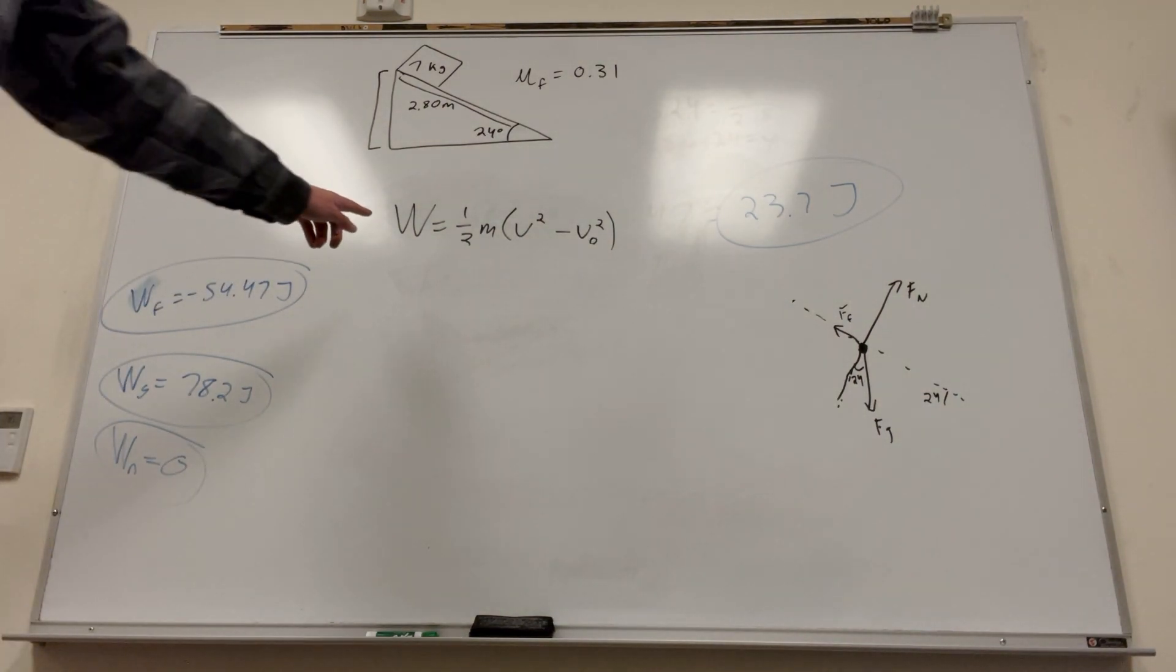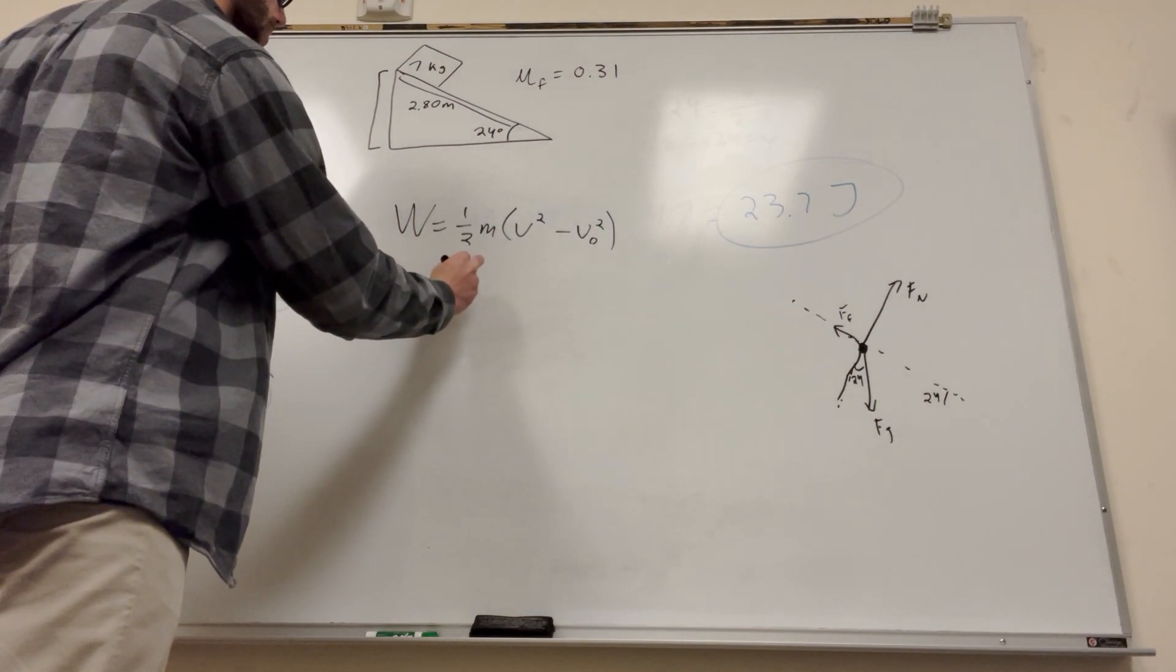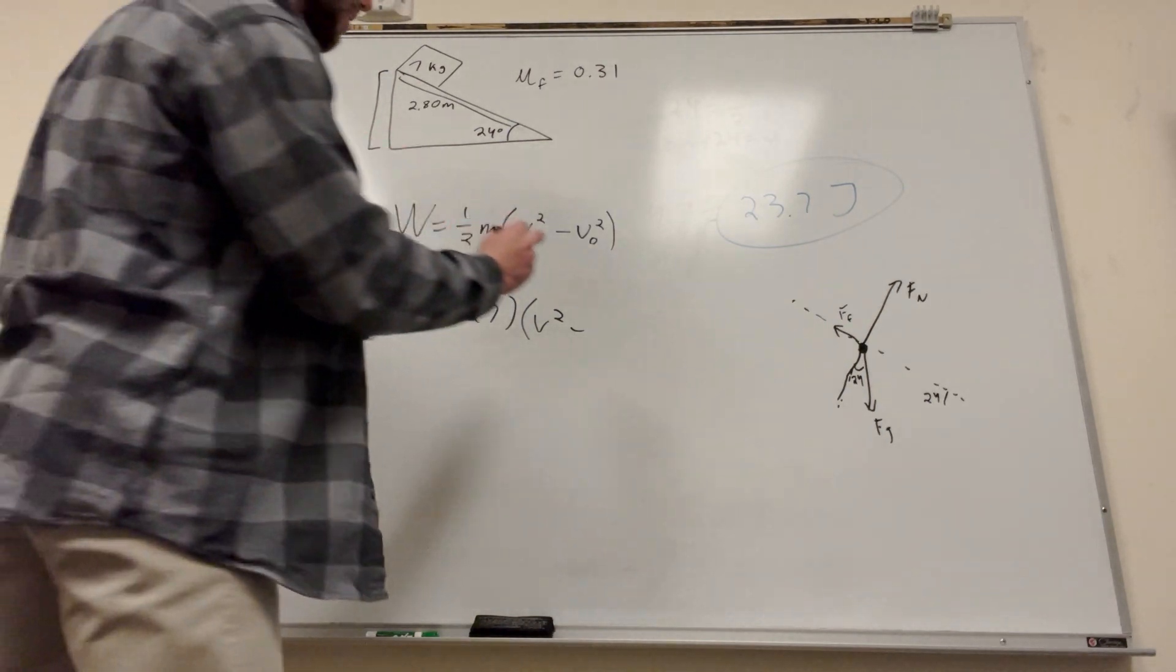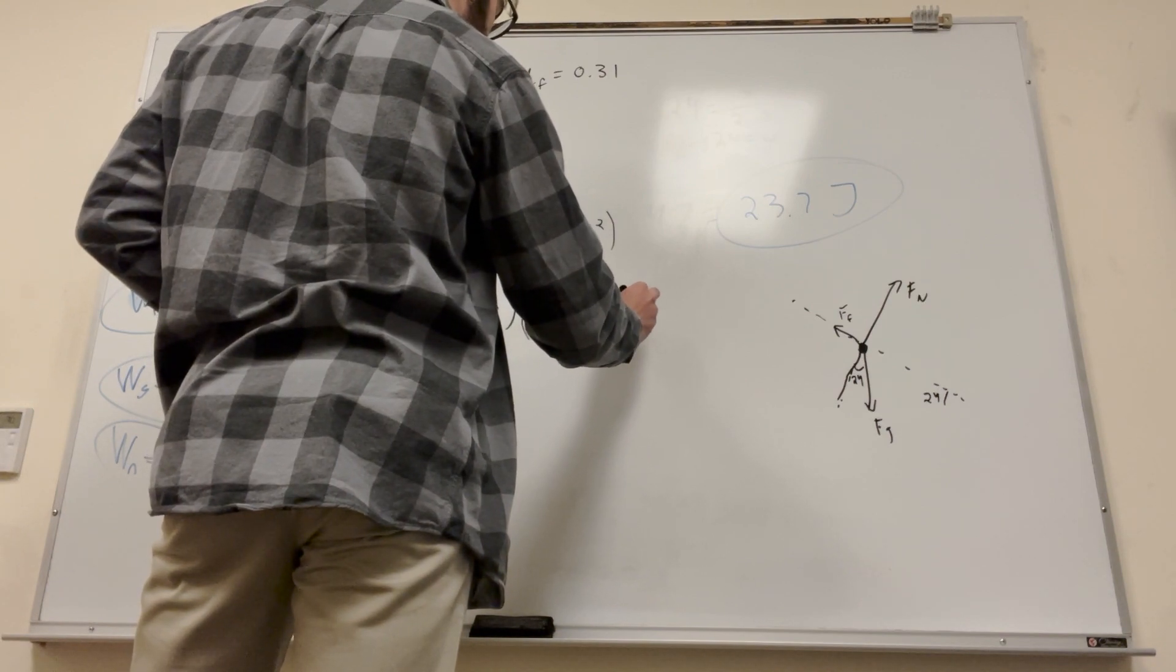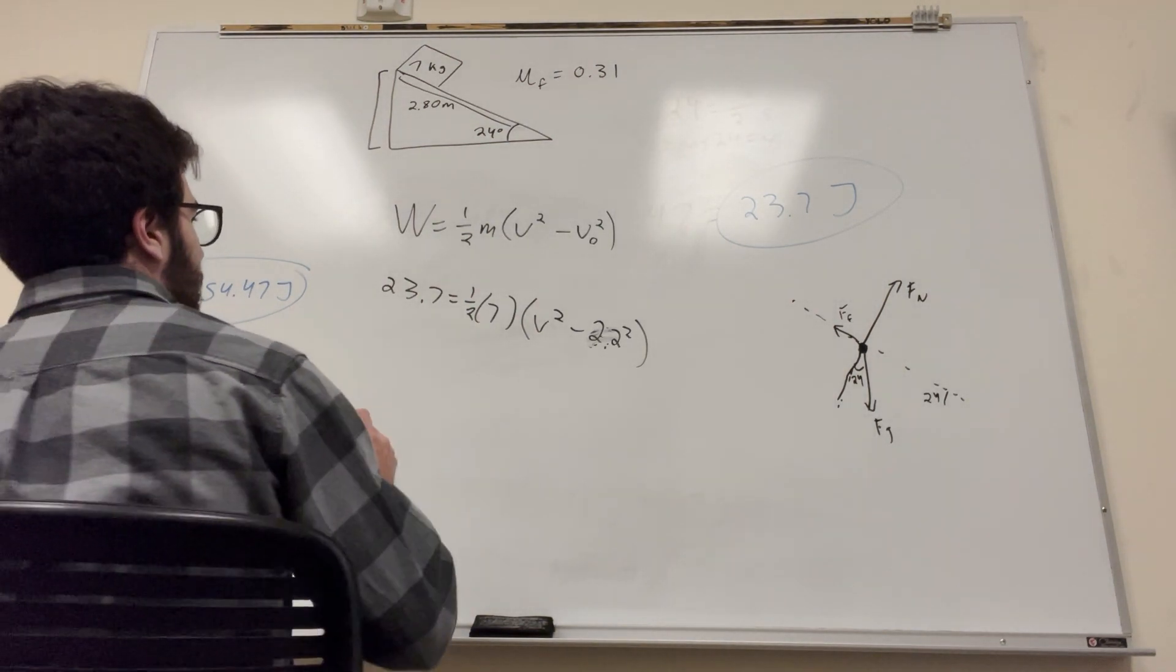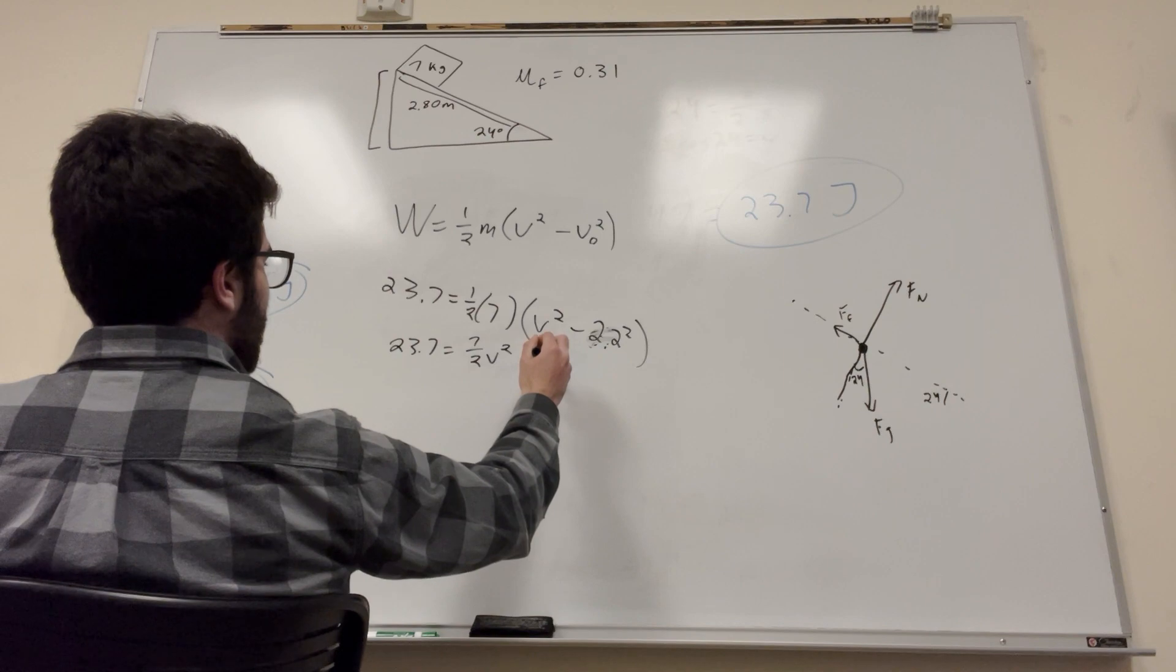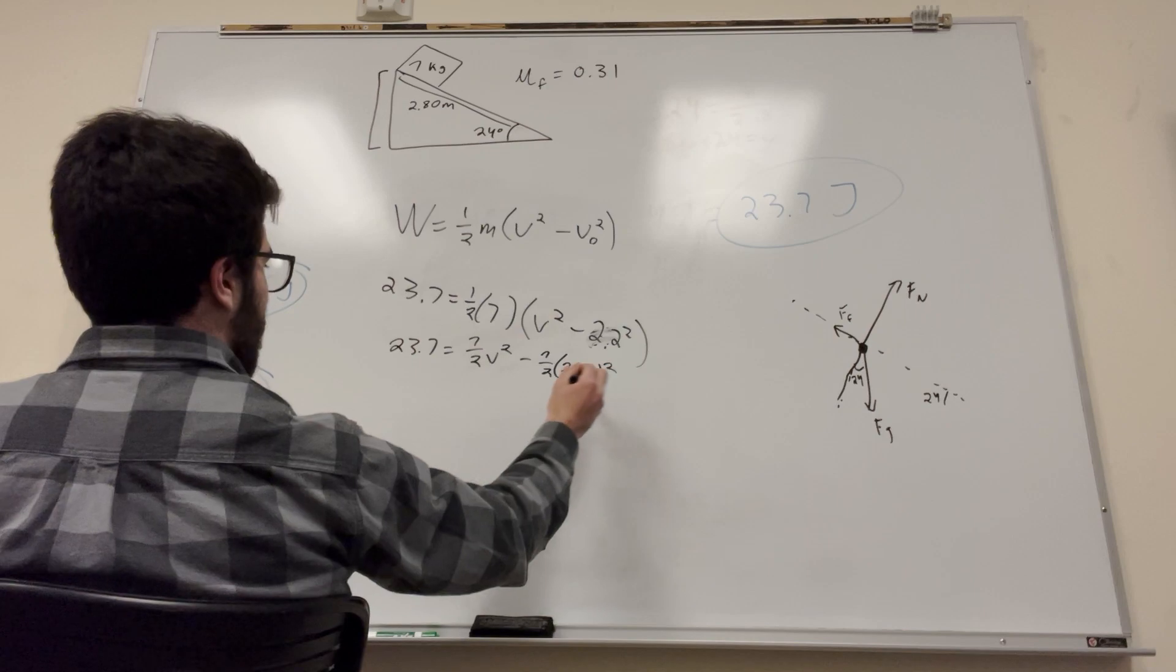So, basically, we know the work done. This is that number right there. So, 23.7 is equal to one-half times the mass which is seven times velocity squared, this is what we're looking for, minus v-naught squared is 2.2 times 2.2 squared. All right, now we can just go ahead and solve this. So, what am I going to do here? I'm going to expand so 23.7 is equal to seven-halves v-squared minus seven-halves times 2.2 squared. You're going to add this to the other side.